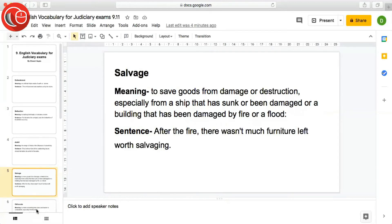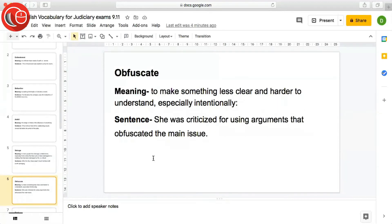The next word is obfuscate, meaning to make something less clear and harder to understand, specially intentionally. Jab aap intentionally cheezo ko confuse kar dete ho jisse ki wo samaj mein nahi aaye ya mushkil se samaj mein aaye that is obfuscate. Sentence: She was criticized for using arguments that obfuscated the main issue. Usko bahut deeply criticized kiya gaya kyunki wo aise arguments use kar rahi thi jo matter ko aur complicate kar rahi thi rather than solve karne ki.